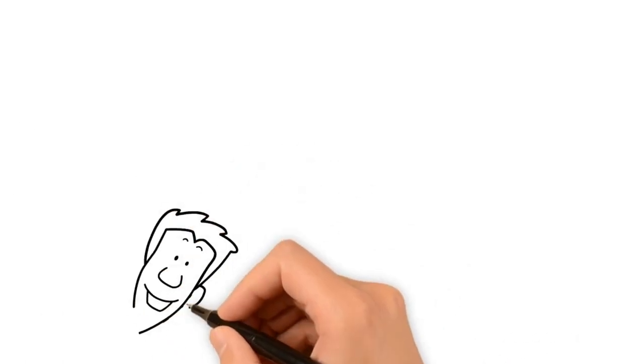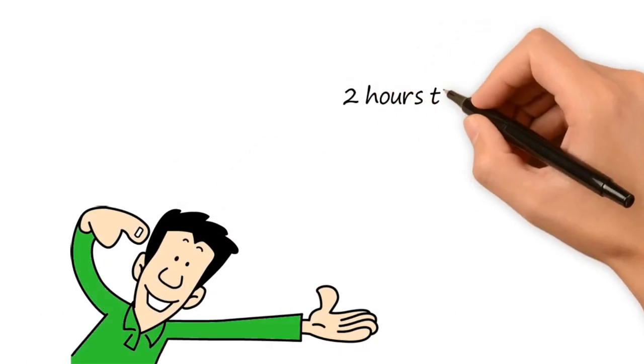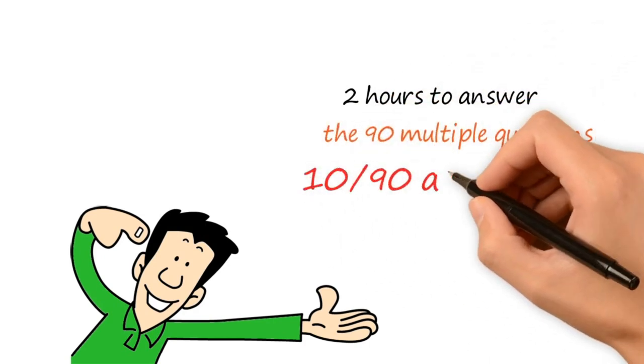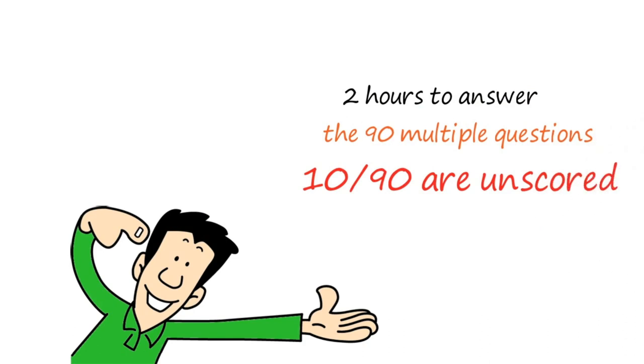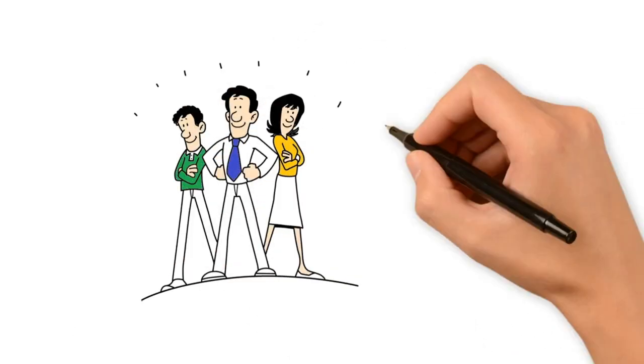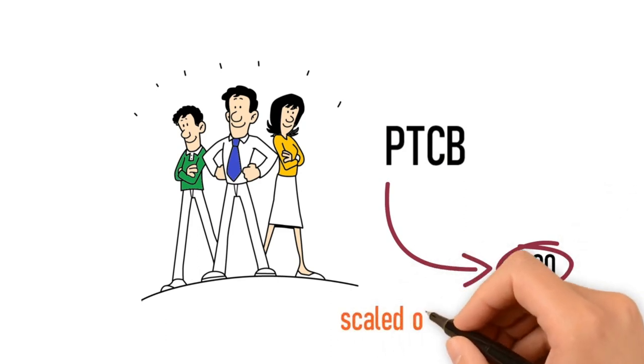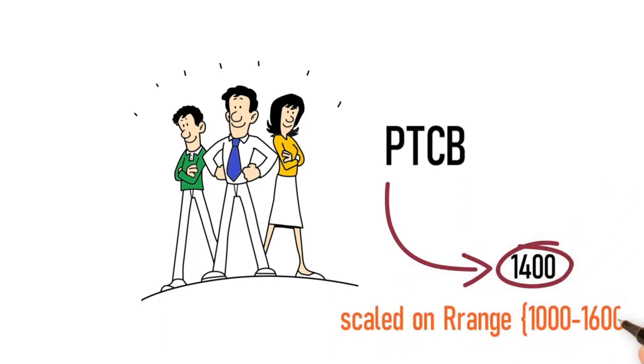Here are some details about the test. You are given two hours to answer the 90 multiple choice questions. Out of those 90 questions, 10 are unscored. The passing score for the PTCB is a scaled score of 1400. The PTCB is scaled on a range of 1000 to 1600.